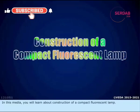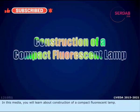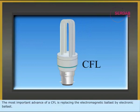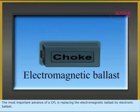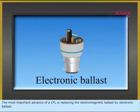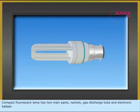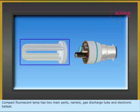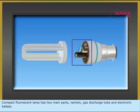In this media, you will learn about construction of a compact fluorescent lamp. The most important advance of a CFL is replacing the electromagnetic ballast by electronic ballast. A compact fluorescent lamp has two main parts, namely gas discharge tube and electronic ballast.